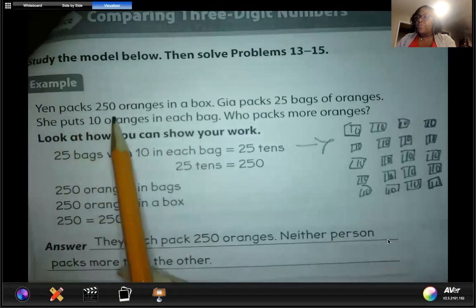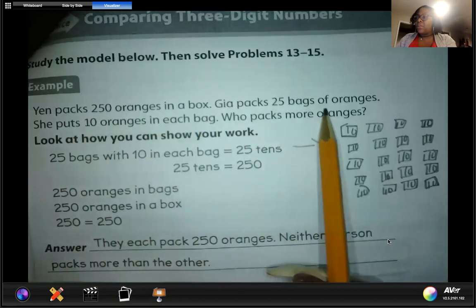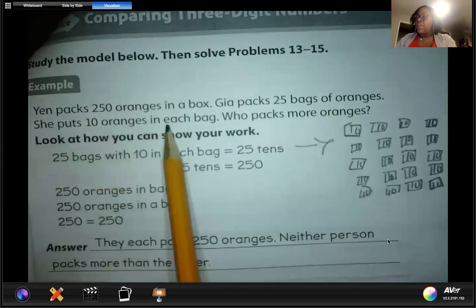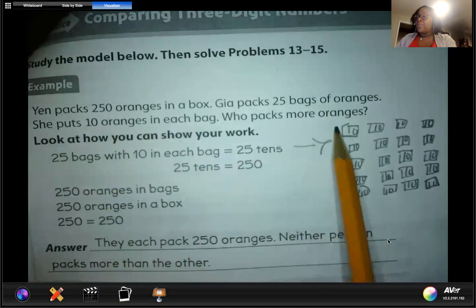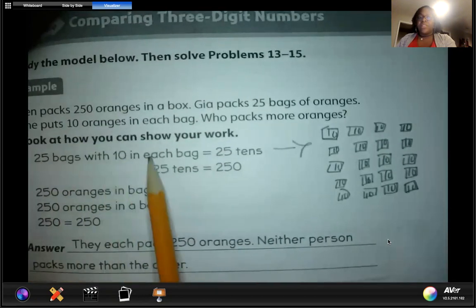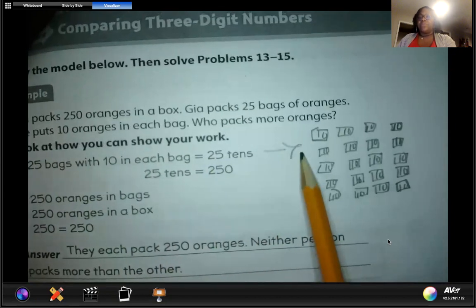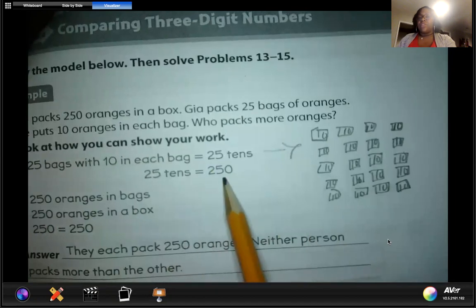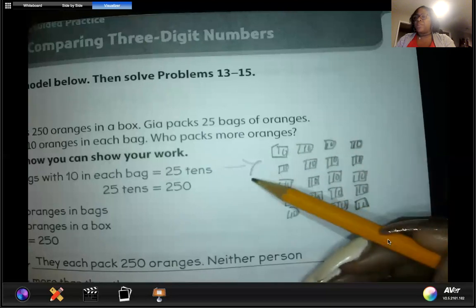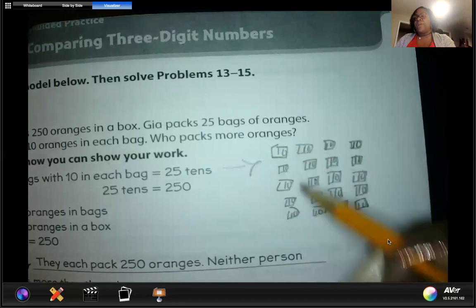Yin packs 250 oranges in a box. Jaya packs 25 bags of oranges. She puts 10 oranges in each bag. Who packs more? Here it shows that 25 bags with 10 in each. Here I just wrote it out so we can see it. If we didn't know that, we could write out 25 bags. These represent bags, and in each one we have 10.